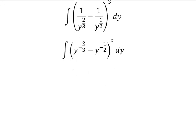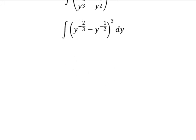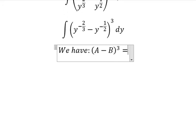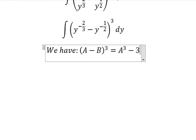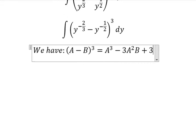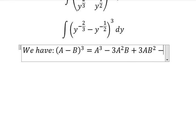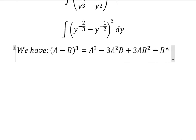Next, we have the formula in here. a minus b to the power of 3 equals to a to the power of 3 minus 3a square b plus 3ab square minus b to the power of 3.